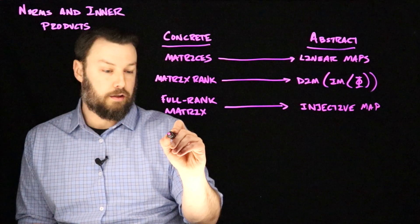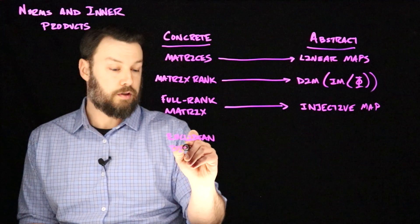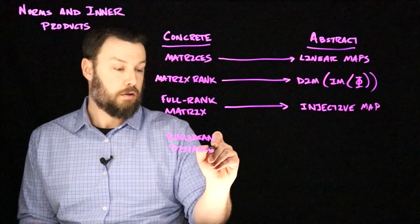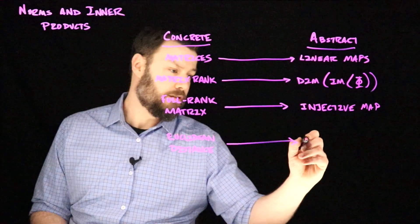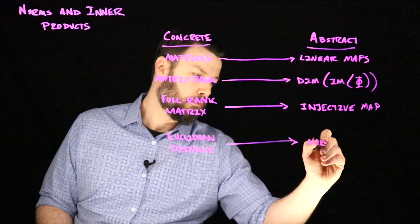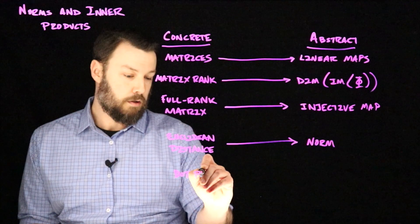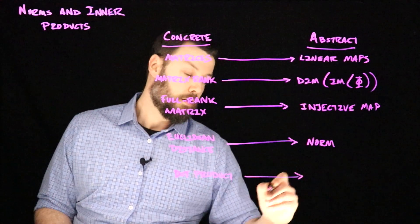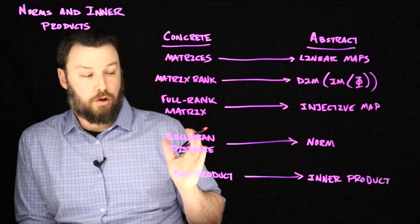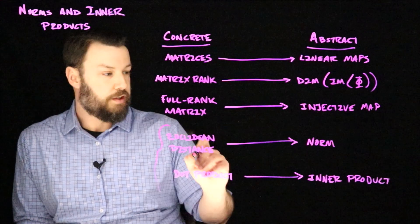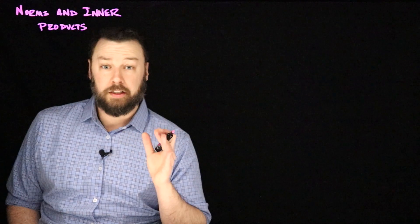Today we're going to generalize a little bit more. We're going to talk about how we might have an idea of Euclidean distance — some notion of the distance between two things — and connect that idea, and the idea generally of length, to the concept of a norm. We're also going to connect the idea of a dot product to the abstract idea of an inner product. Today we focus on norms and inner products.